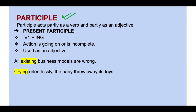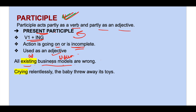Now we will learn the concept of participle. Participle acts partly as a verb and partly as an adjective. The ing form of verbs acts as present participle when an action is going on or is incomplete, and it can also be used as an adjective. For example: 'All existing business models are wrong' — here 'existing' modifies the noun 'business models,' so it acts as an adjective. In 'Crying relentlessly, the baby threw away its toys,' 'crying' is a present participle because the action is ongoing.